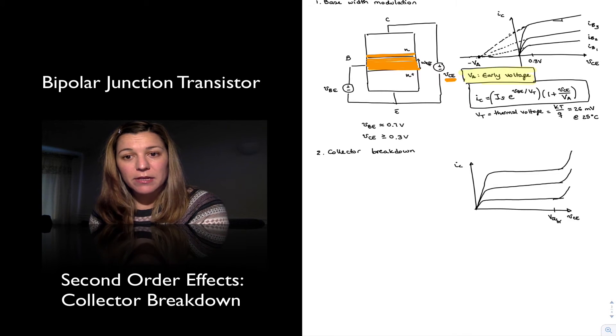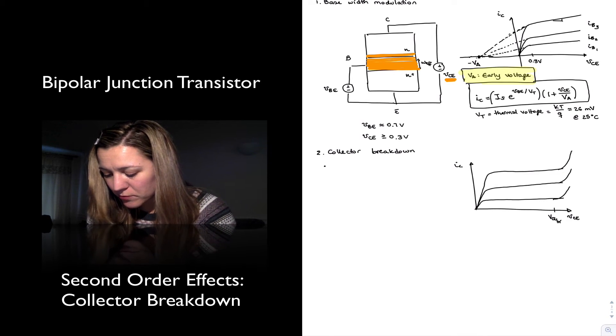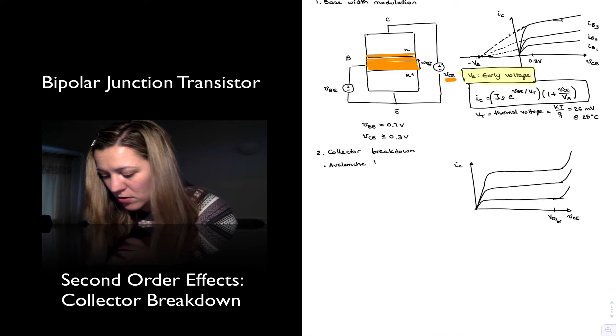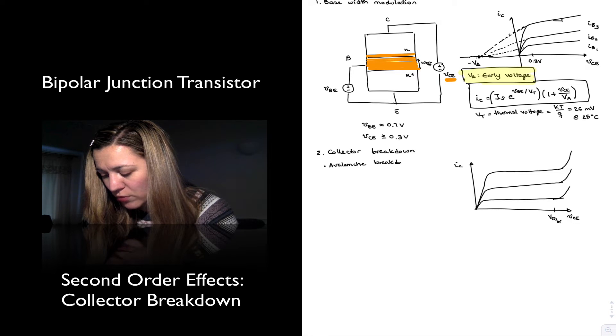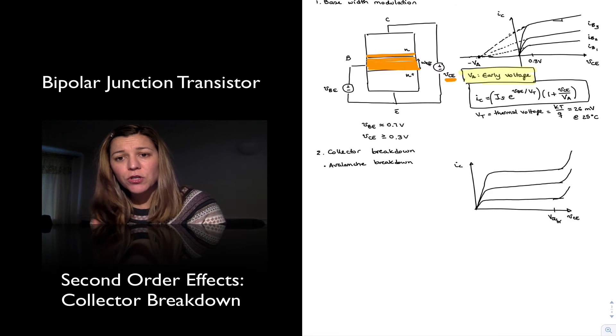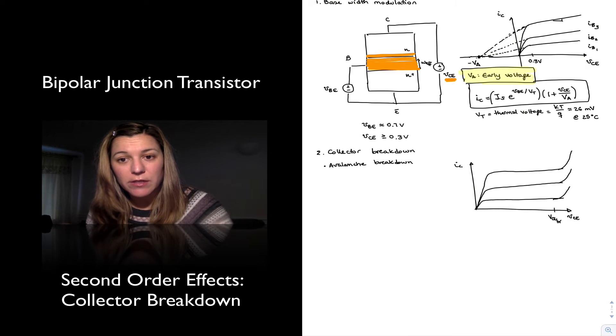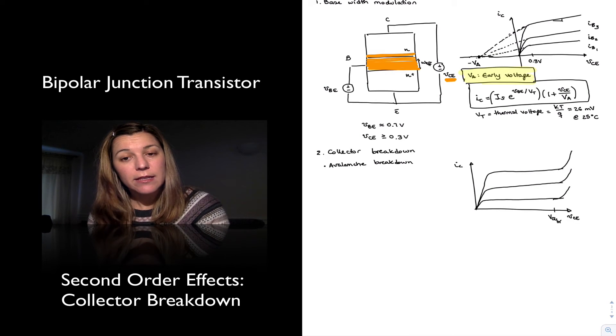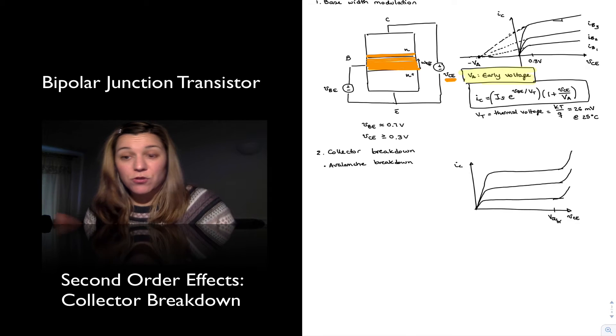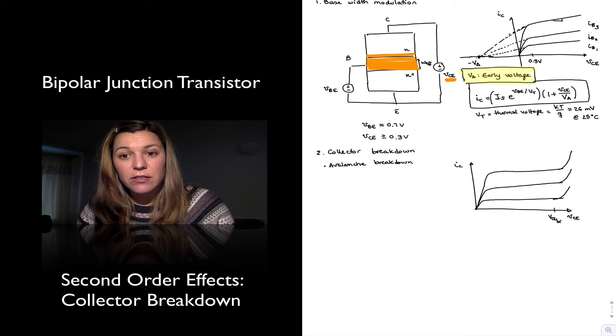One of them is called the avalanche breakdown. And the avalanche breakdown occurs due to the following. You increase your collector emitter voltage, and now the electrons that are being collected by the collector are gaining a lot of kinetic energy because you're increasing the strength of that electric field.